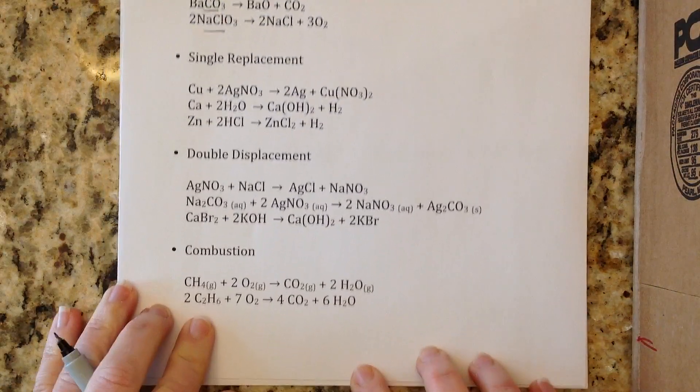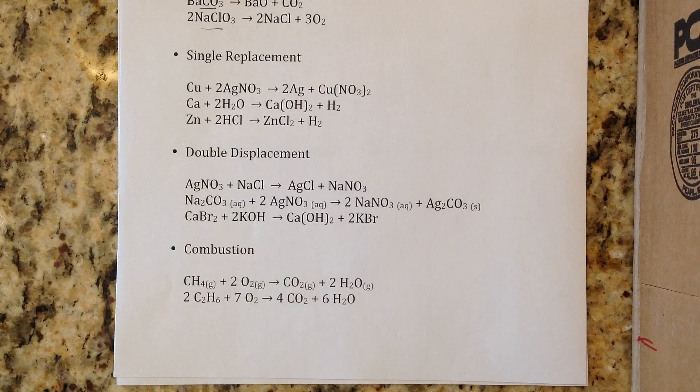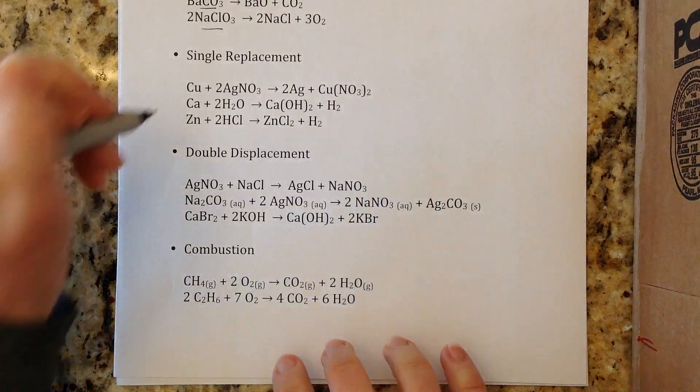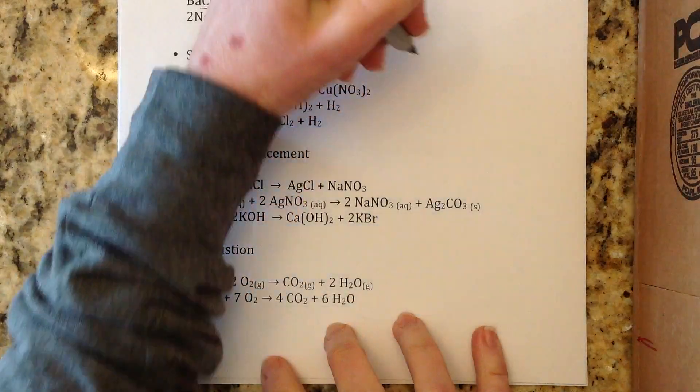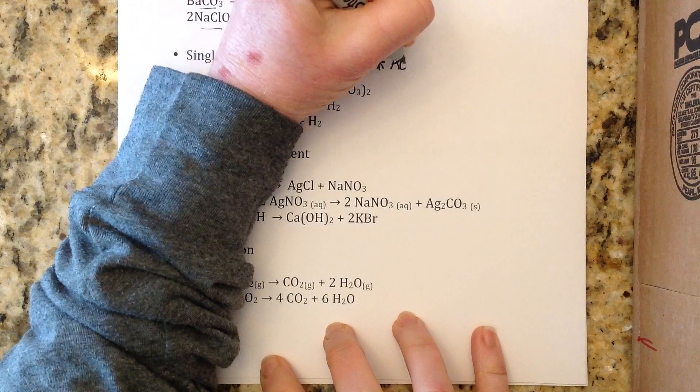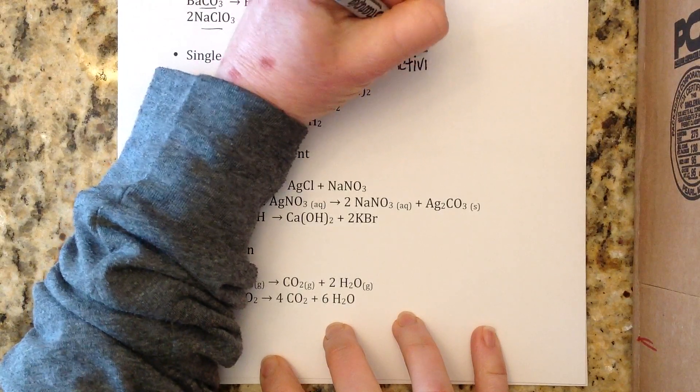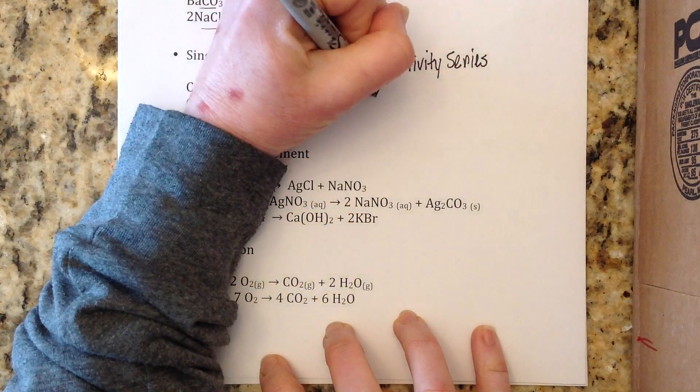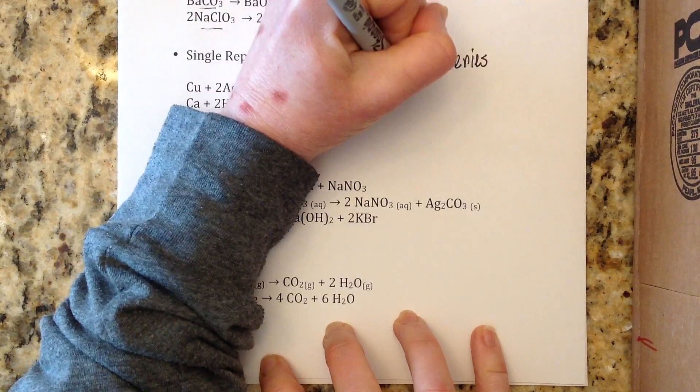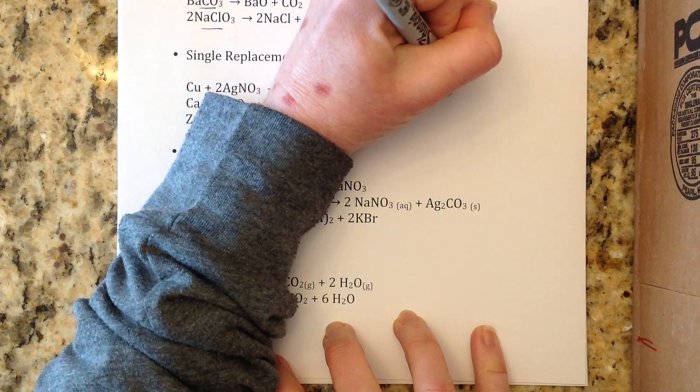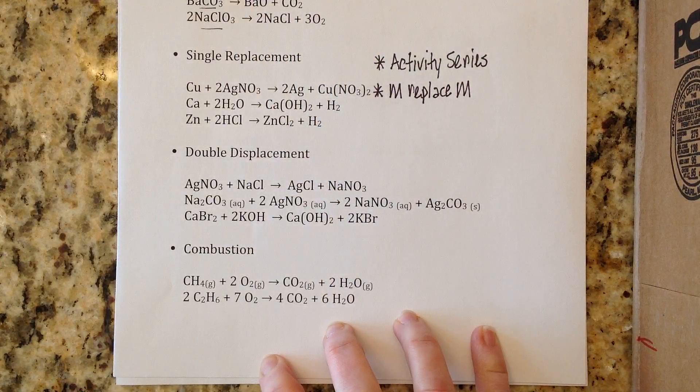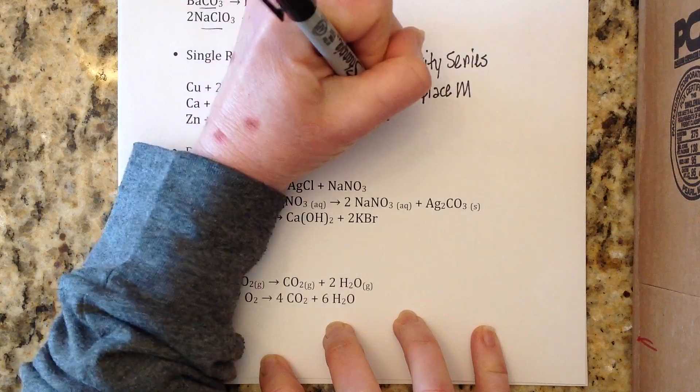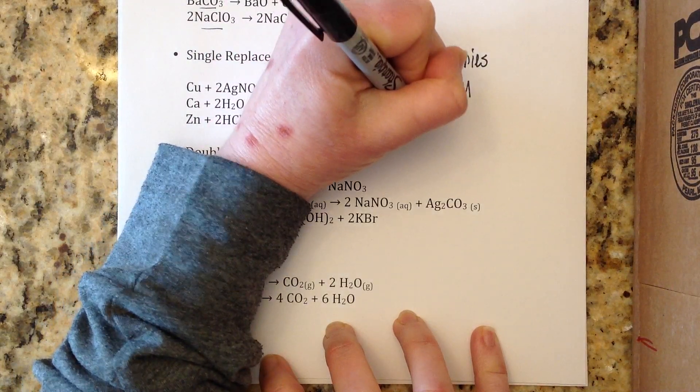Then we have single replacement reactions. In single replacement reactions one element gets replaced with another element. When we get to this lesson you're going to be using something called the activity series. The general rule is metals can only replace metals, and non-metals can only replace non-metals. There are a few exceptions to that when we're dealing with acids and water, and we'll get into that in detail on that lesson.